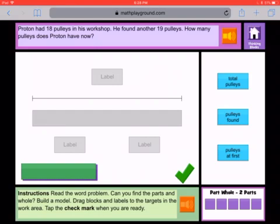All right, now we know what to do: reading the word problem, finding the parts and the whole, building a model. Our problem is, Proton had 18 pulleys in his workshop. He found another 19 pulleys. How many pulleys does Proton have now?